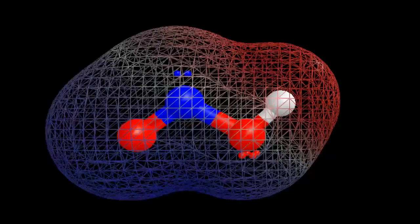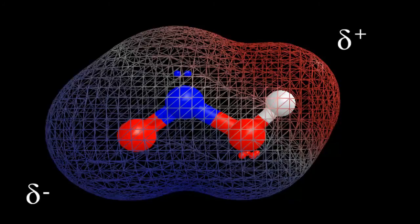Here, the mesh around the molecule shows blue (negative) and red (more positive). So you see there really are two poles: a positive and a negative.